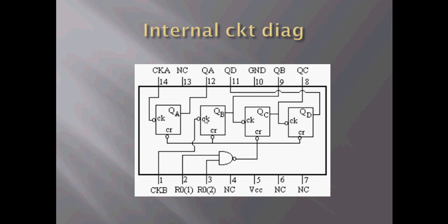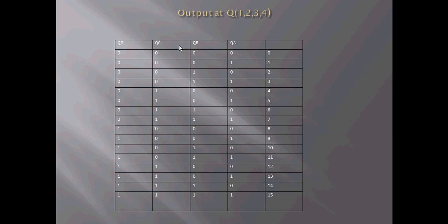give your clock to pin number 1. The output is taken from QB, QC, and QD. QB, QC, and QD count from 0 to 7.